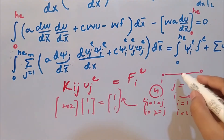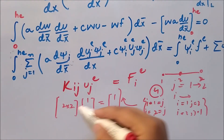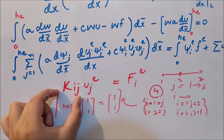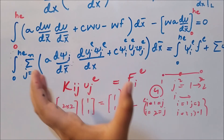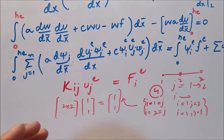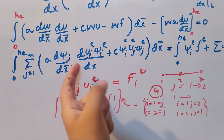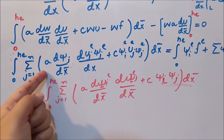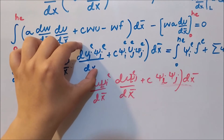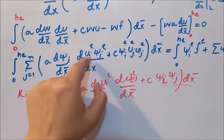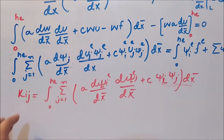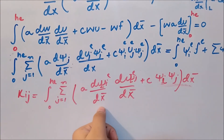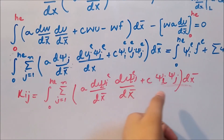At the element level we need to specify K_ij for each element and build a general matrix from the integral. Extracting K_ij by taking u_j out of the integral, K_ij contains the derivative of psi_i, the derivative of psi_j, and the terms psi_i and psi_j. To proceed, we specify the element type. For a linear element where n equals 2, we use psi_1 and psi_2.